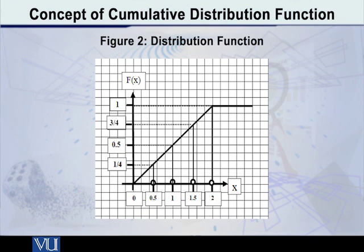And when it reaches 2, when x reaches 2, it has attained height 1. And now, from 2 to plus infinity, it is a horizontal line at level 1.